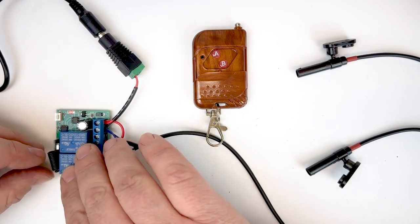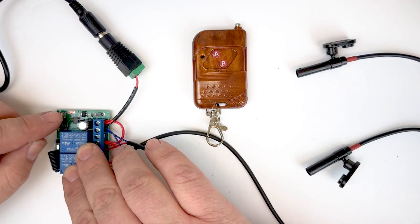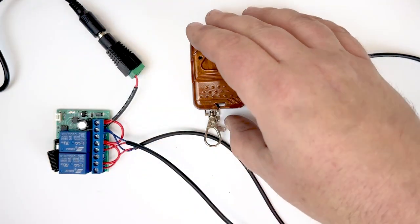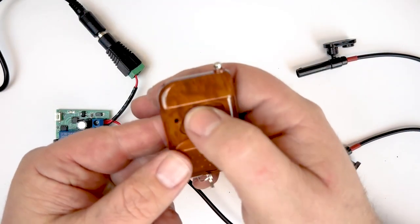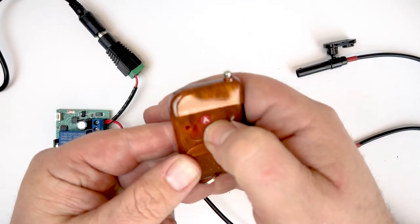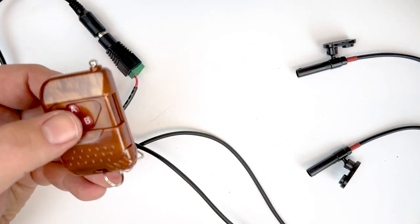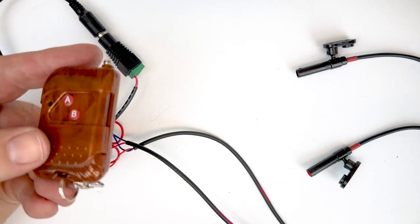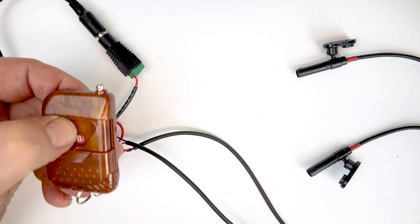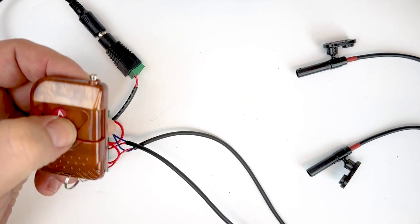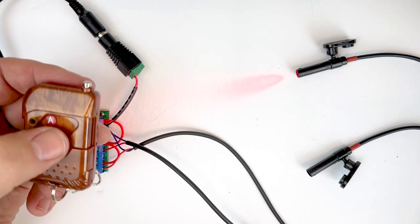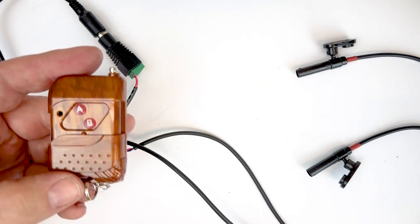So next we can do the toggle mode. And for that, we do two presses. Again, the light will flash and turn off. And then we do the same thing here. We'll hit A and then B. So now the relays are set to toggle. So here on our remote, if I hit the A button, the relay one will come on. It'll stay on until I hit the A button again. And the same for relay two with the B button here. Hit that. It'll stay on until I turn it off. So that's the toggle mode.